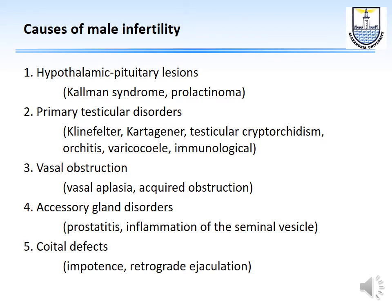The causes of male infertility can be at the hypothalamic-pituitary level — for example Kallmann syndrome or prolactinoma; at the testicular level — such as Klinefelter syndrome, Kartagener syndrome, cryptorchidism, orchitis, varicocele, or immunological factors; at the level of obstruction — vasal aplasia or acquired obstruction; accessory gland disorders like prostatitis; and coital defects such as hypotension or retrograde ejaculation.